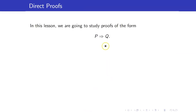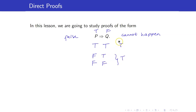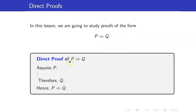In this lesson, we are going to study proofs of the form P then Q. The first and most important proof method is the direct proof of the implication. Since an implication is false only when the premise is true and the conclusion is false, we will show that this case cannot happen. It suffices to show that if the premise is true, the conclusion must also be true. If the premise is false, the implication is always true regardless of Q.